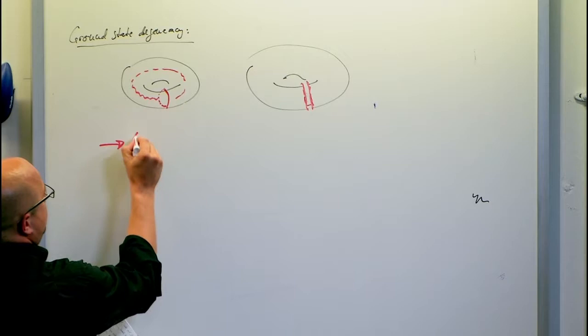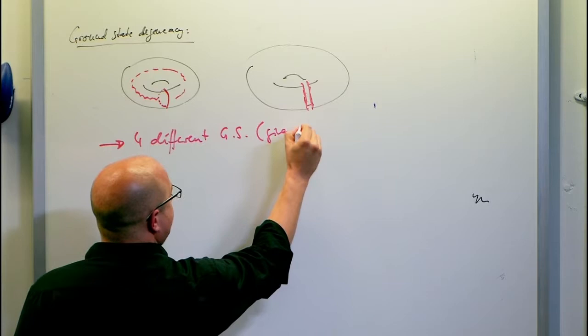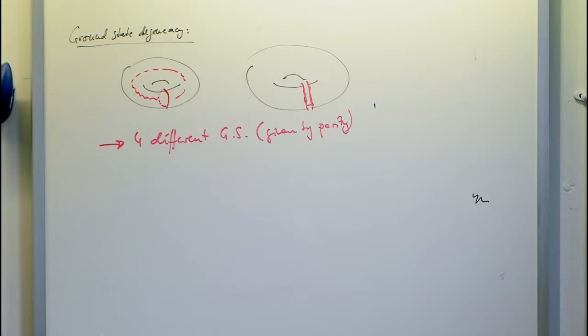It's also straightforward to see that this model has the topological correction to the entropy. If you cut any region and ask how many closed lines you cut, because these form closed loops, the number of lines cut always has to be even. There's a Z2 type of constraint, which in the entropy gives a correction of ln(2) — or in a logarithmic sense, exactly one bit.